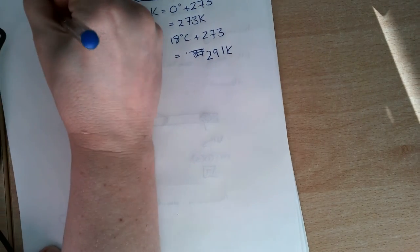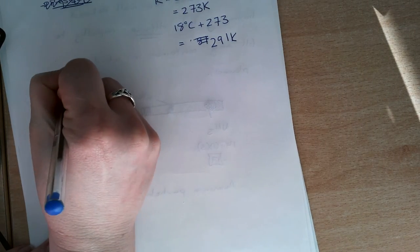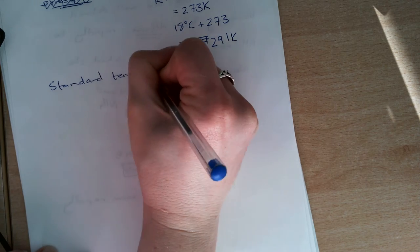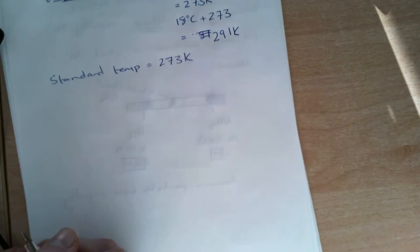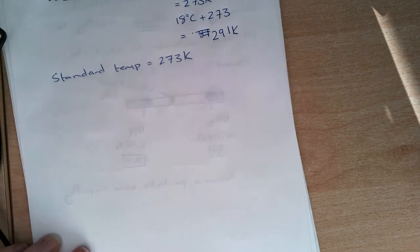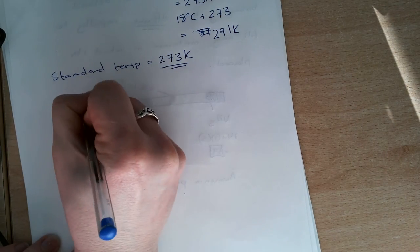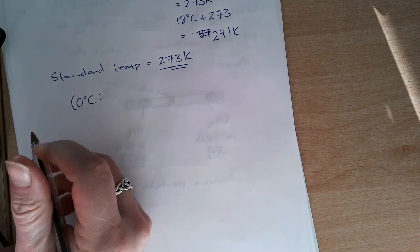So what we're talking about here then is we call standard temperature 273 Kelvin. The reason why we use that is because we actually take the value for zero degrees Celsius, which is my freezing point of water.